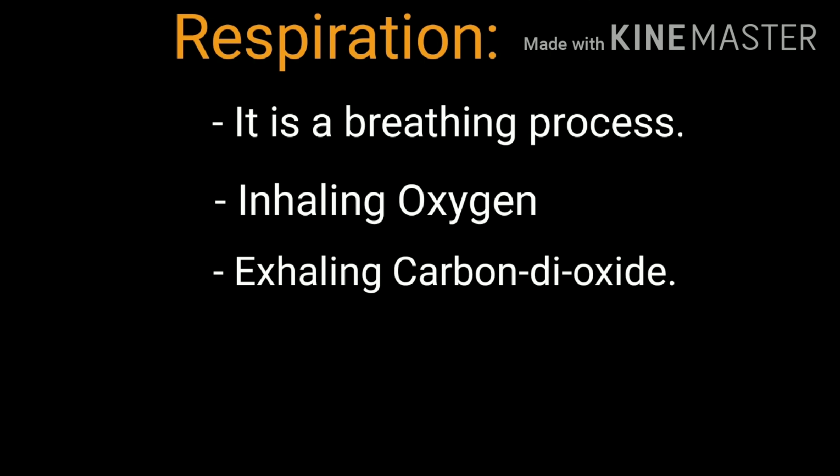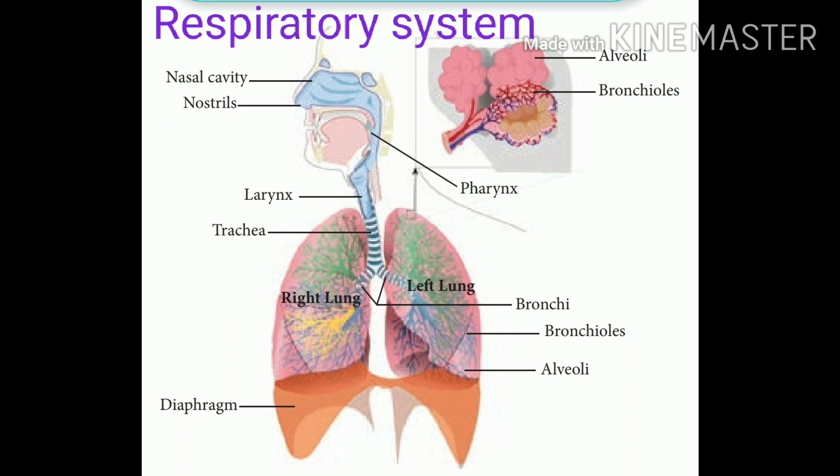We inhale oxygen from our surroundings and we exhale carbon dioxide. This respiratory system helps us for respiration. There are many organs in the respiratory system. Let's see about them in detail.